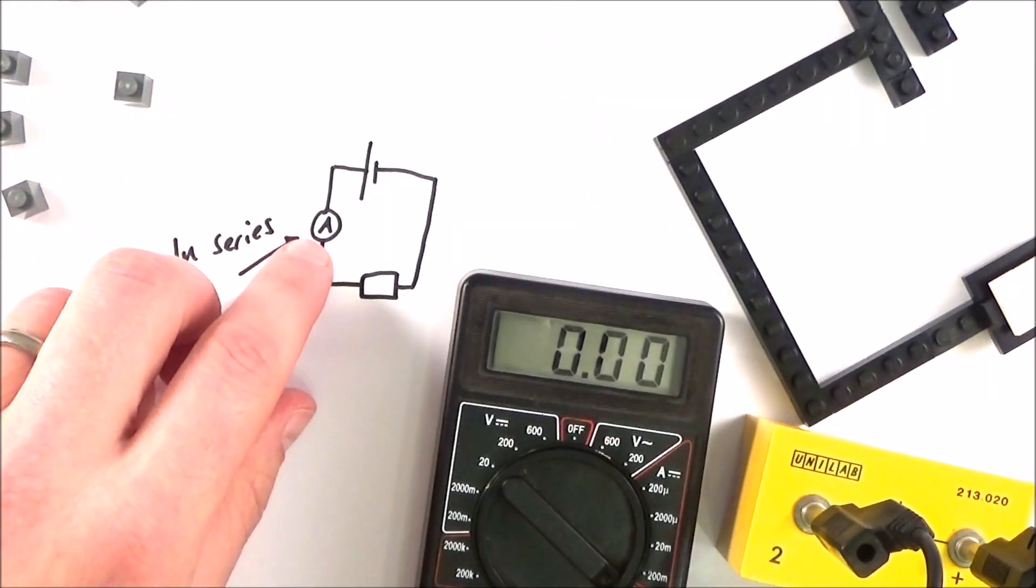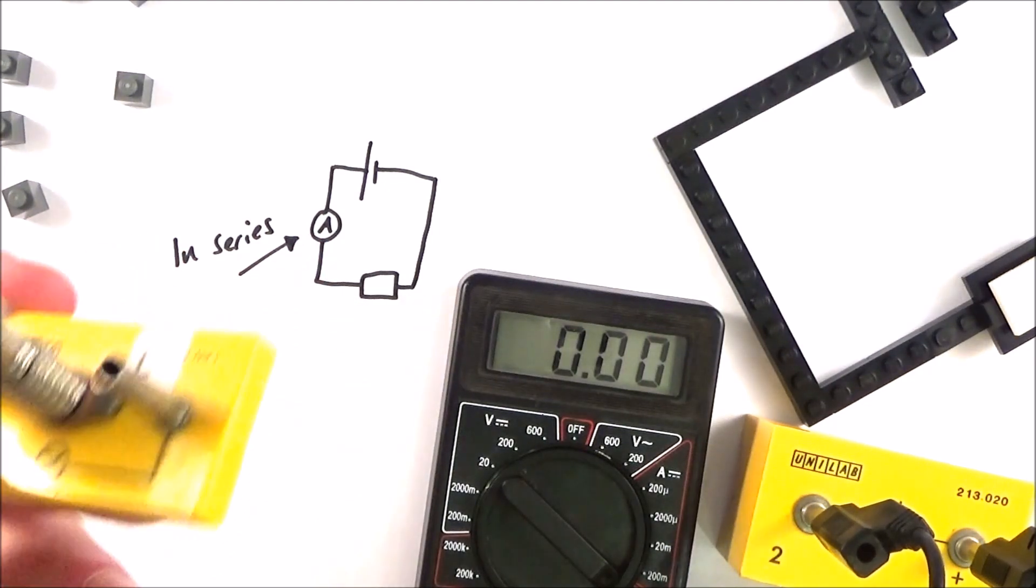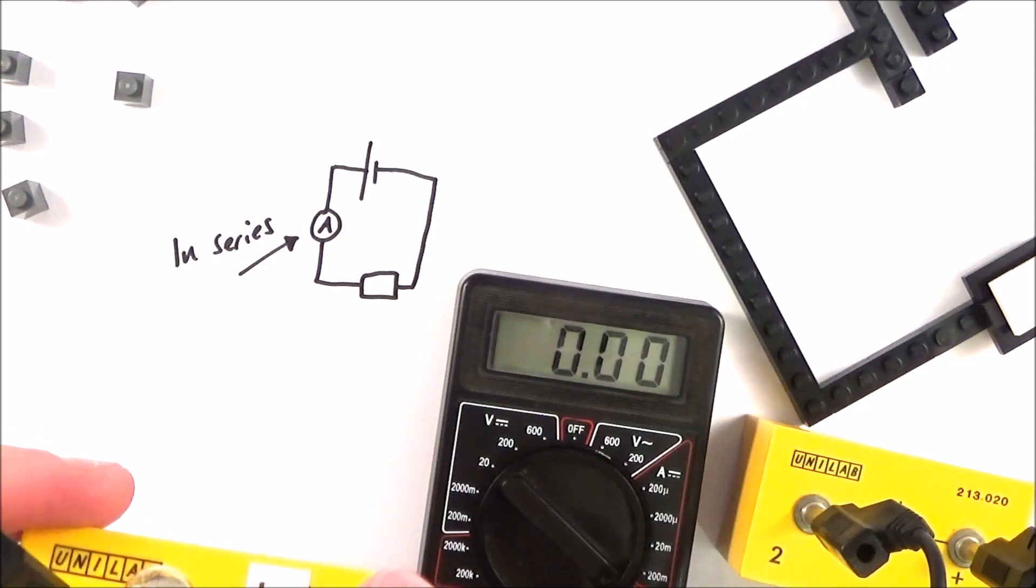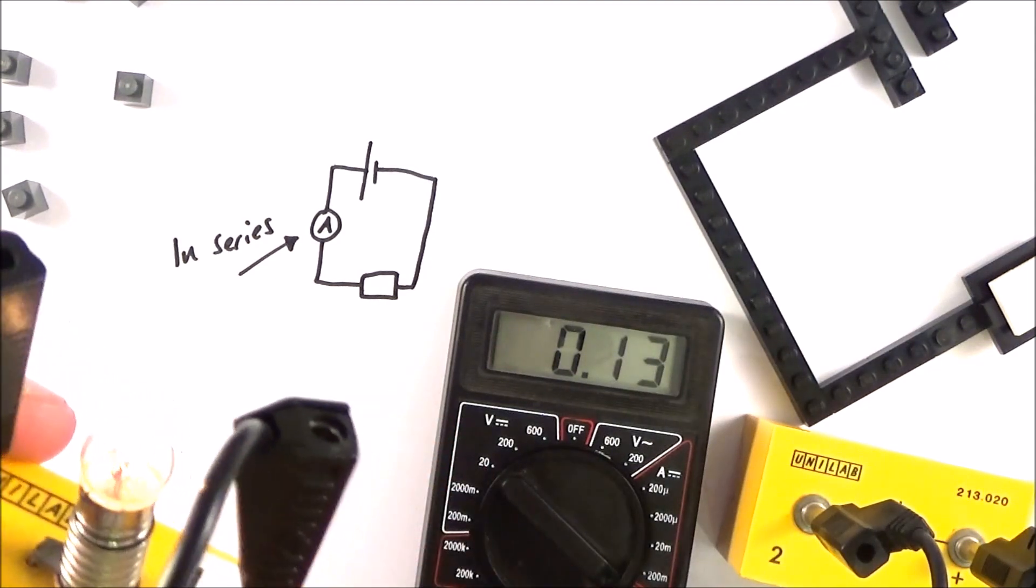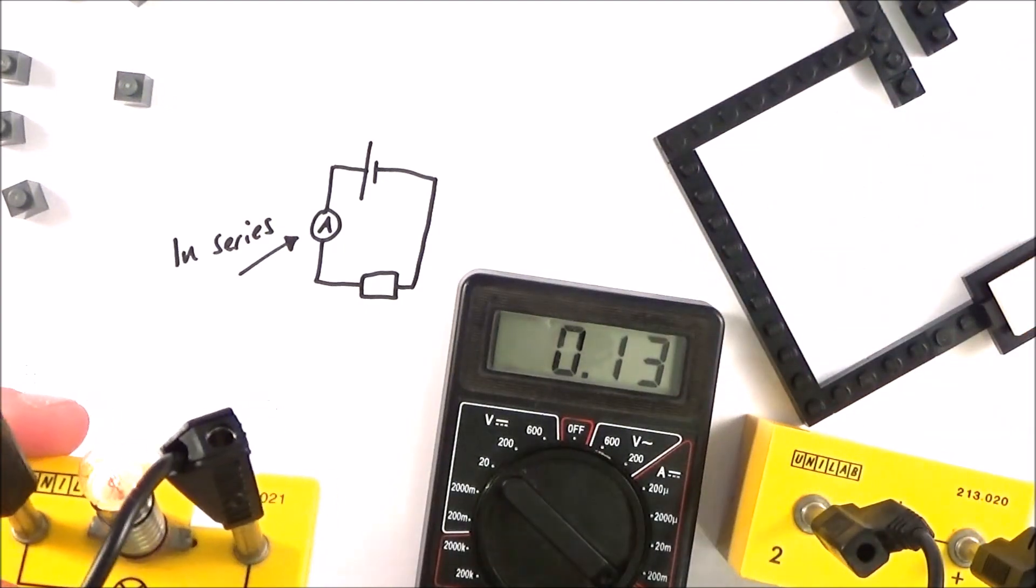So it's important to note that the ammeter always goes in series and it should have a very, very low resistance. I've set up a simple circuit here just with a light bulb and the ammeter, and as soon as I connect that, although it's not particularly bright, we can see that there's a small current flowing of maybe 0.13 of an amp.